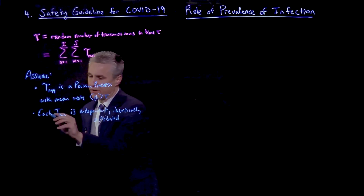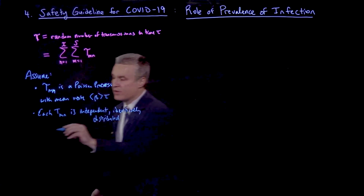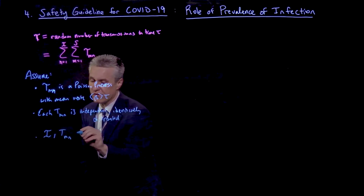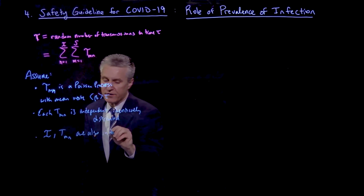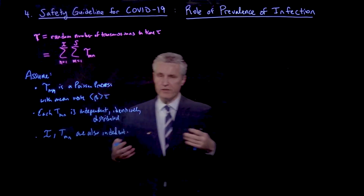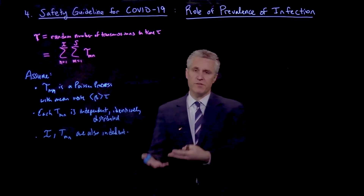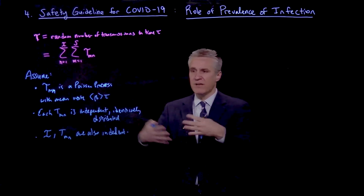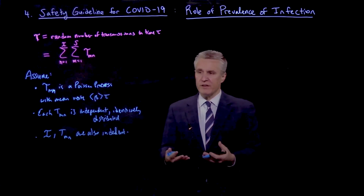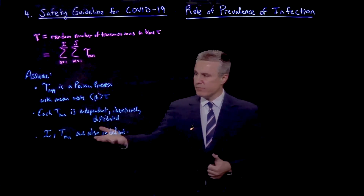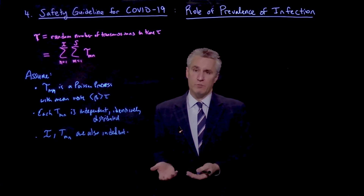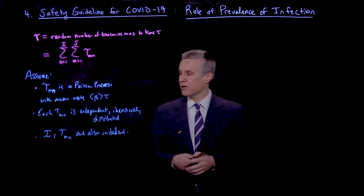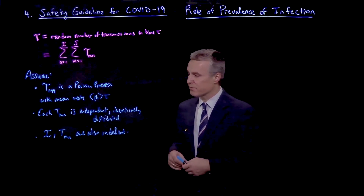Furthermore, we assume that not only each transmission is independent, but also that the number of infected people I and all these transmissions are also independent or uncorrelated. So basically the arrival of infected people is uncorrelated to how they're transmitting. And that's partly because we are interested in the limit of a small number of infected people — it's almost always going to be 0 or 1, because the prevalence is not going to be that high in the population generally.